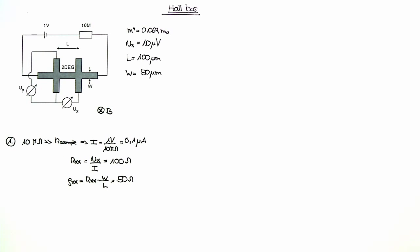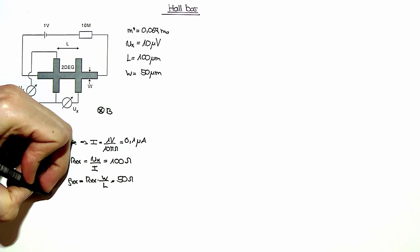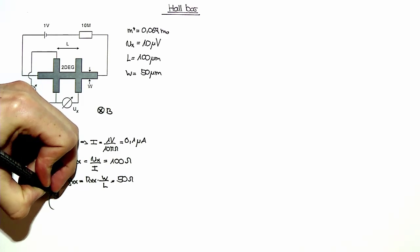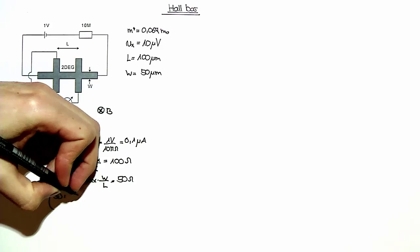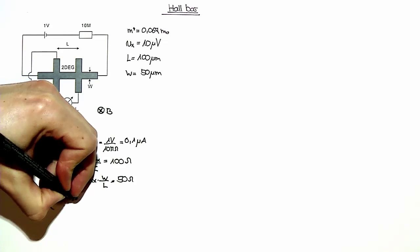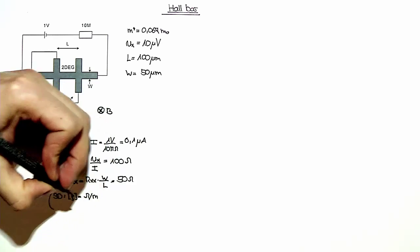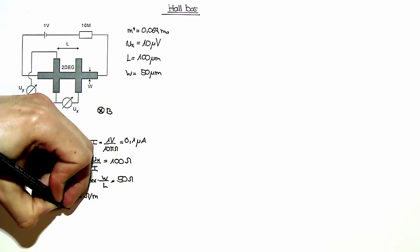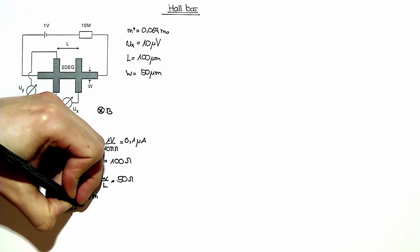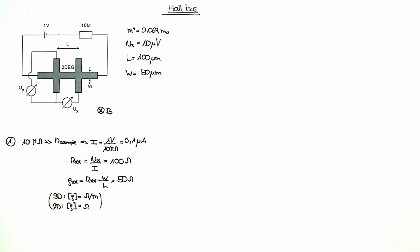Note the unit of the resistivity, this would be different in 3D. For a three-dimensional system, the unit of the resistivity is ohms per meter, whereas in our case for a two-dimensional electron gas the unit is ohms, so it depends on the dimensionality of the system that is considered.